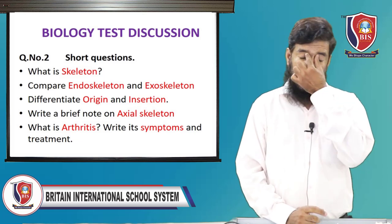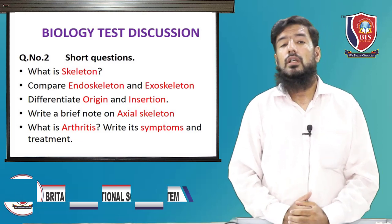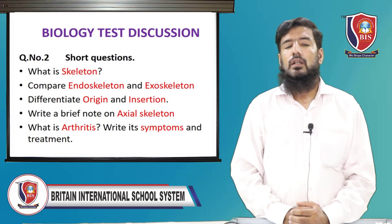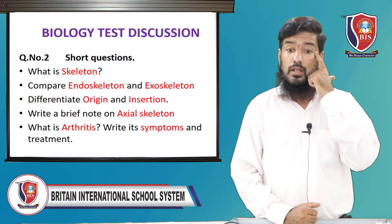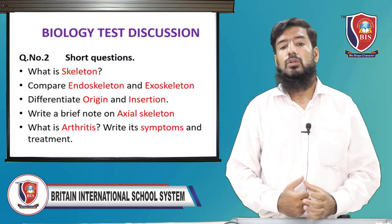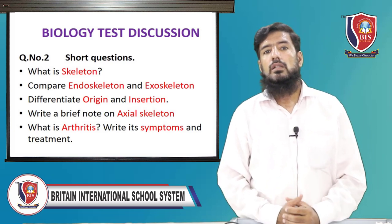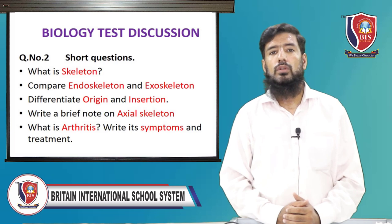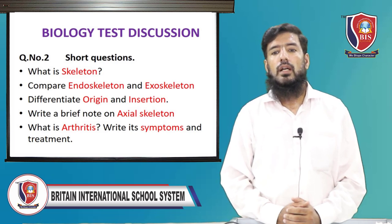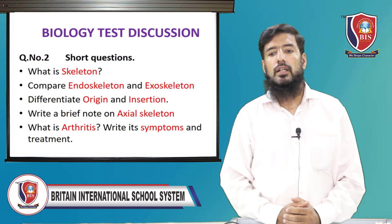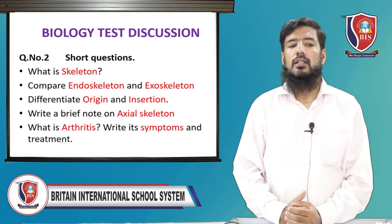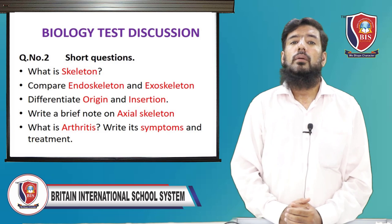Short question: differentiate between origin and insertion. This is from the muscles and movement topic in Chapter 13. The end of the muscle attached to the immovable bone is called origin. The other end of the muscle attached to the movable bone is called insertion.